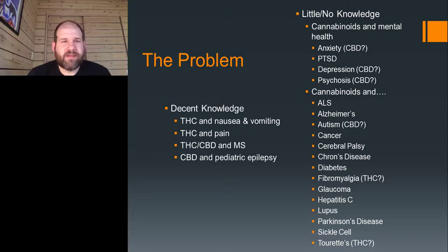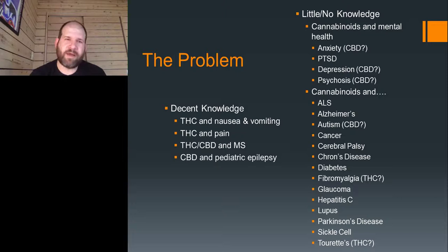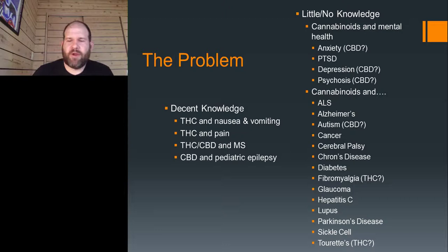If you keep going down the list — ALS, Alzheimer's, cancer, cerebral palsy — we're really just scratching the surface. This is really important because we need to do large-scale studies to understand formulations, concentrations of cannabinoids, dosing, and all the different pieces, so that a doctor who sees a patient can say: you have X condition, I know a combination of this and this is useful, you should start at this number of milligrams and move up, and you should be concerned about these drug interactions. We're not there yet for those conditions on the right, and that's a problem.